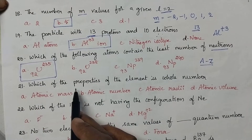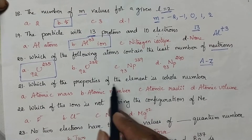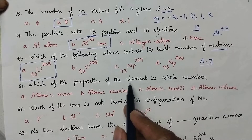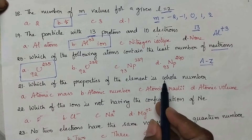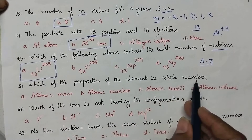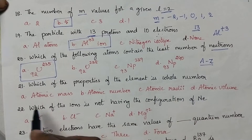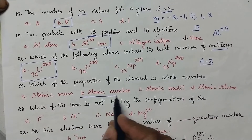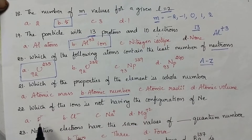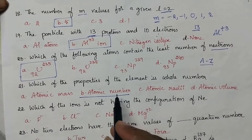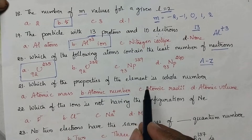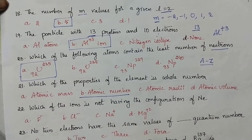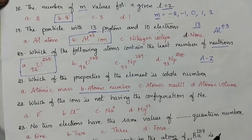Which of the properties of the element is a whole number? Generally, the atomic number is the whole number. So the whole number is atomic number.